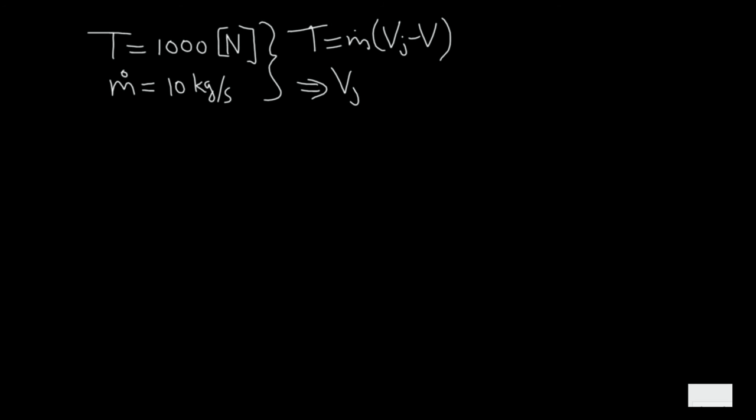What I am going to assume is that I have some kind of propulsion system which delivers a thrust of 1000 N. This is just a purely hypothetical situation. Then this propulsion system I am assuming has a mass flow of air of 10 kg per second flowing through it. Based on our thrust equation, which is m-dot times the velocity difference given to the air, we find that in order to create 1000 N of thrust, vj minus v must be equal to 100 meters per second. So we have to accelerate the air by this amount.